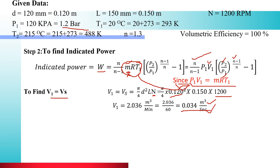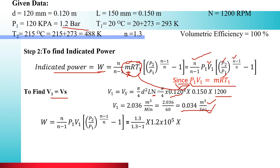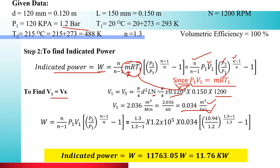Now substituting all values into the indicated power formula: W = [N/(N−1)] × P1 × V1 × [(P2/P1)^((N−1)/N) − 1], where P1 = 1.2 × 10⁵ Pa, V1 = 0.034 m³/s, pressure ratio = 9.11, and N = 1.3. Pause the video and calculate. The answer comes to 11,763.05 W = 11.76 kW. This is the indicated power.